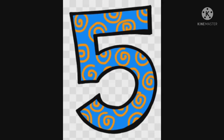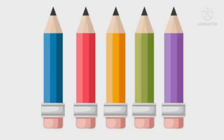Now here we are having some objects and we have to count them. These are pencils. Now we will count together — how many pencils are there? Repeat after me: one, two, three, four, five. How many pencils are there? Five! Let's count one more time: one, two, three, four, five. Very good!